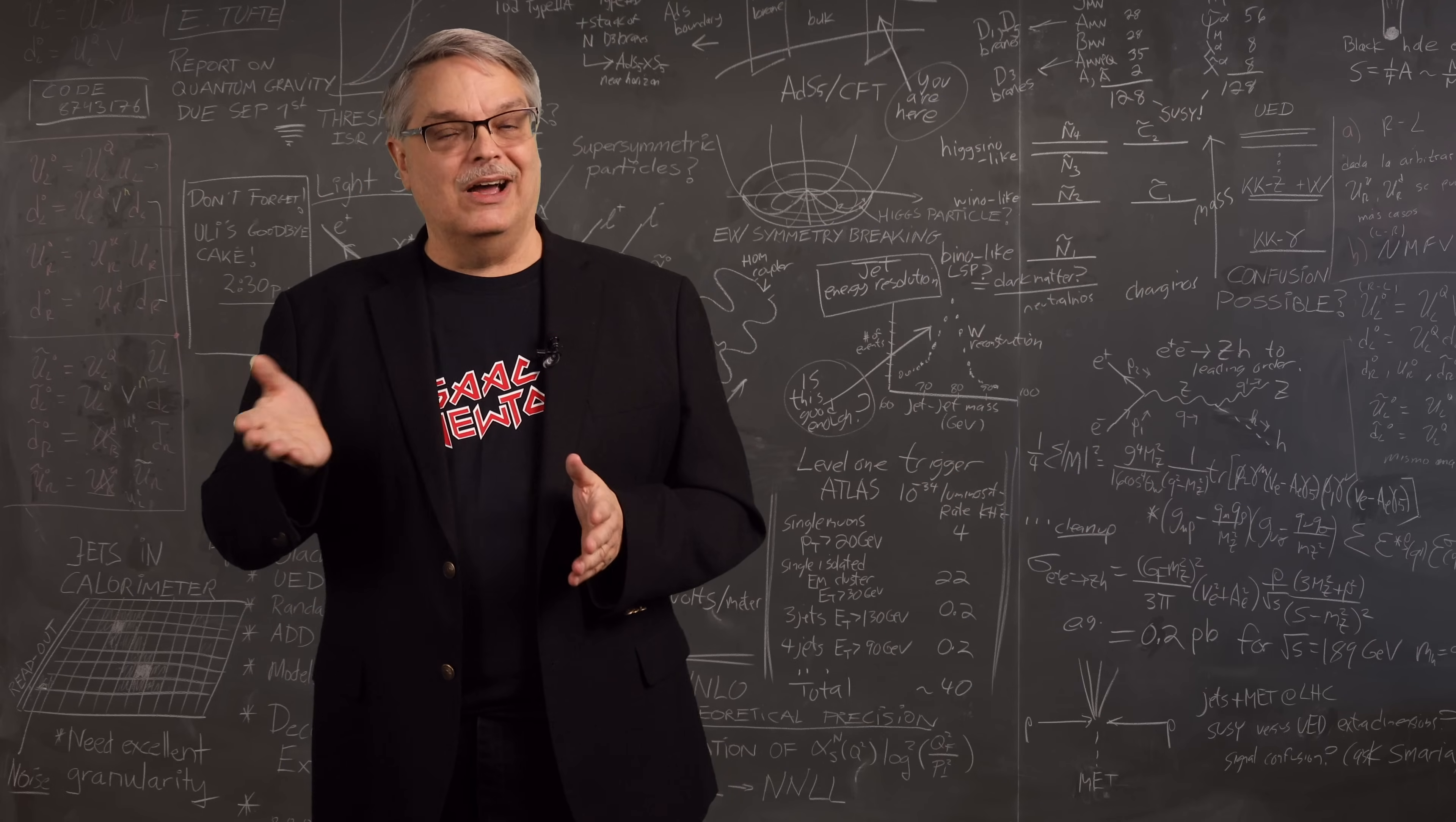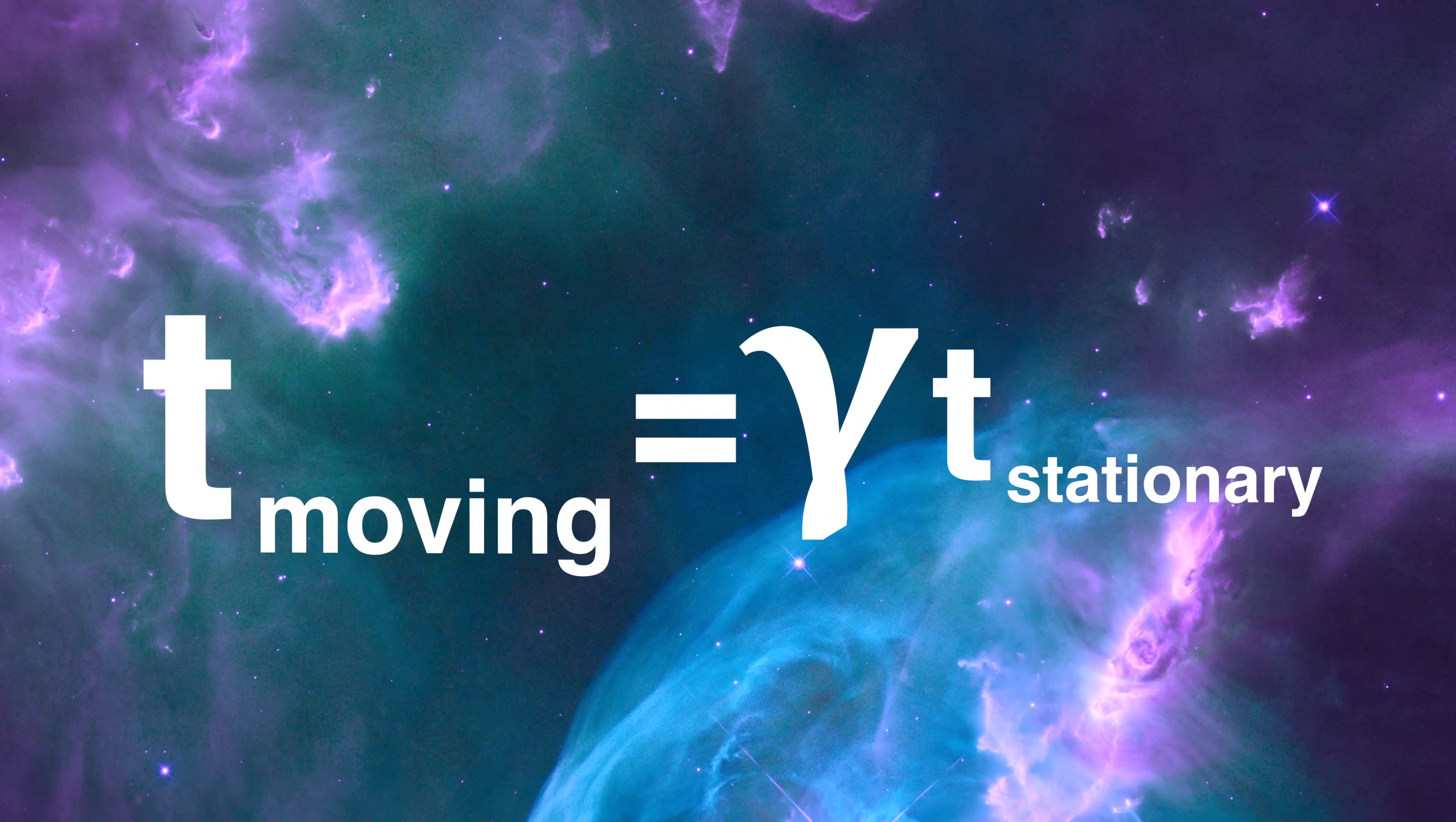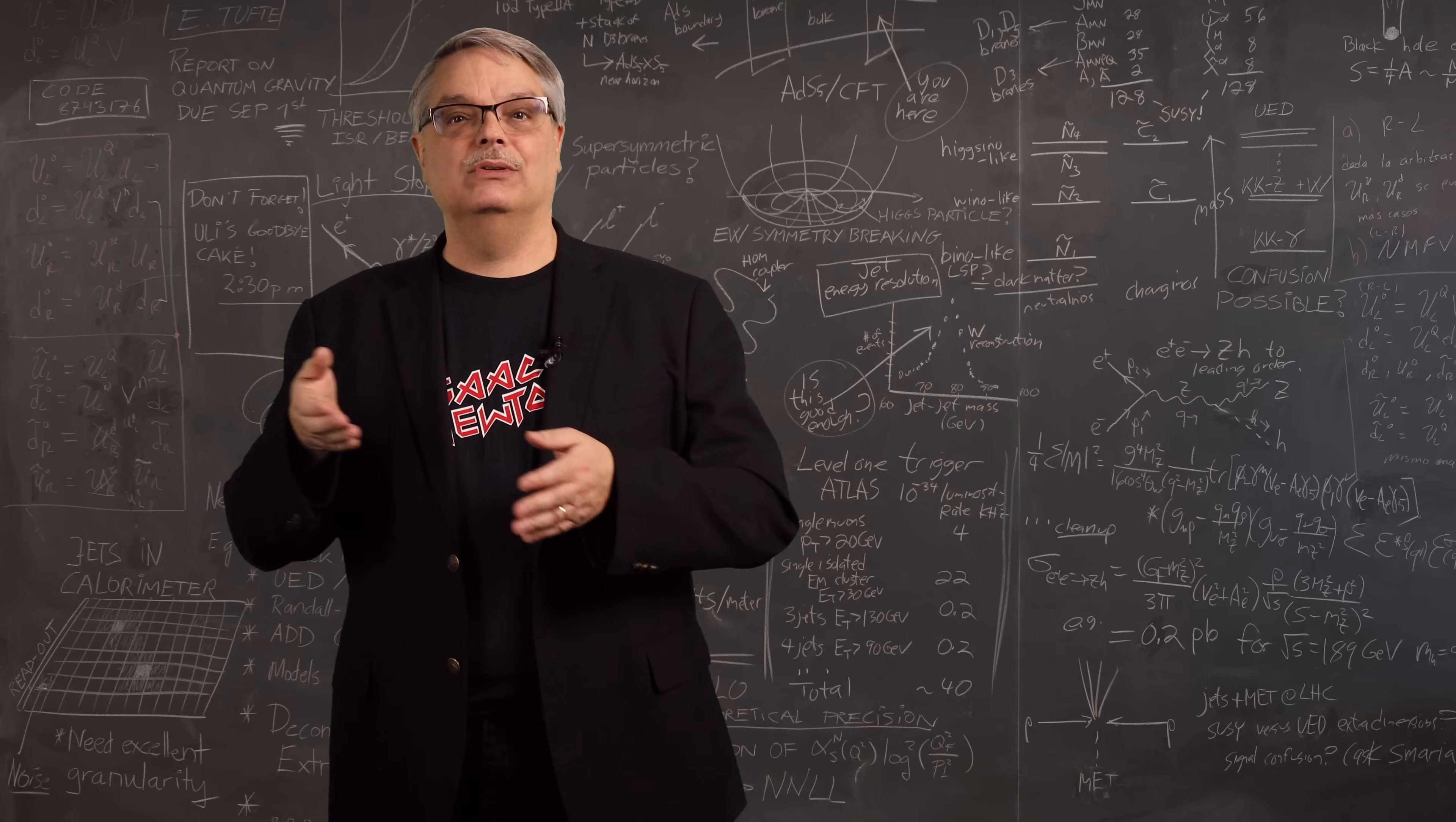Okay, so let's get back to the time equation. What it says is simple. Given that gamma is greater than or equal to 1, it means that the time experienced by a person seeing the clock move is more than the time experienced by someone who doesn't see it move, and this means that someone moving ages more slowly than a person who isn't.